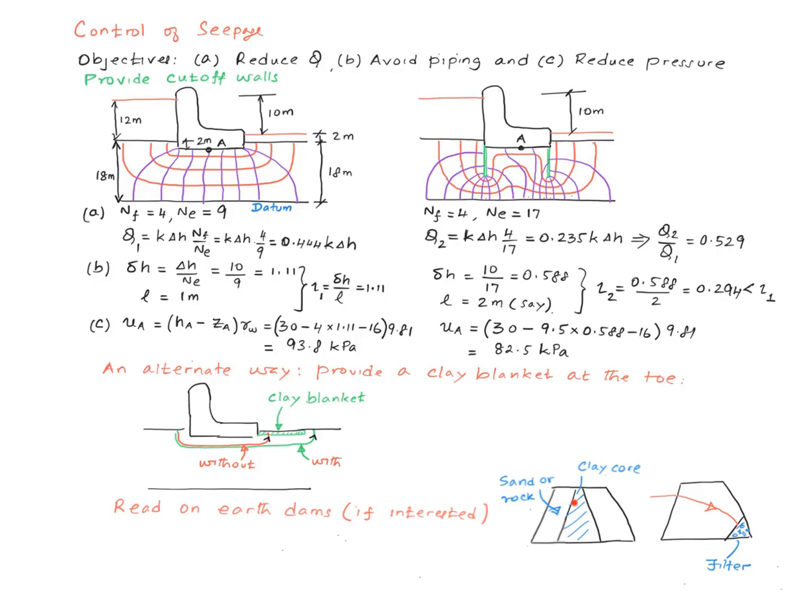Sometimes a clay core is built in the middle of a rock fill dam, or a dam built out of sandy material, and sometimes you provide a filter at the toe of the dam in order to bring the top phreatic line into the filter, instead of letting it flow on the face of the dam, which can lead to erosion and eventual failure. But I will let you read the detail from the book on these.